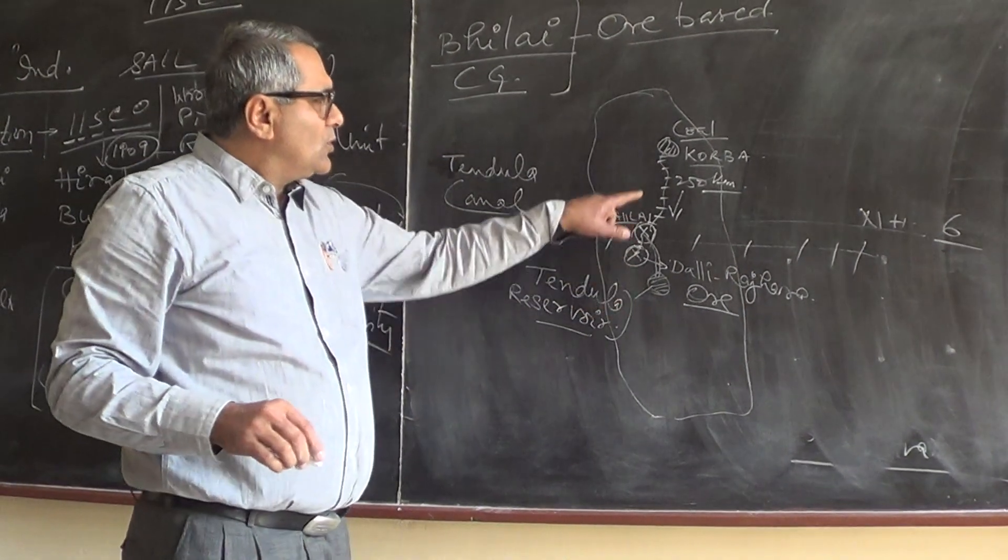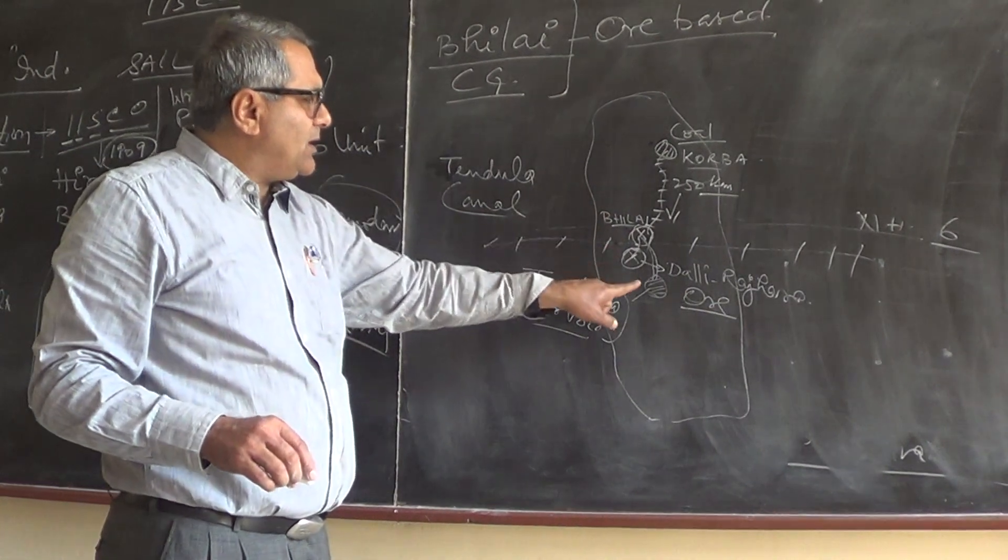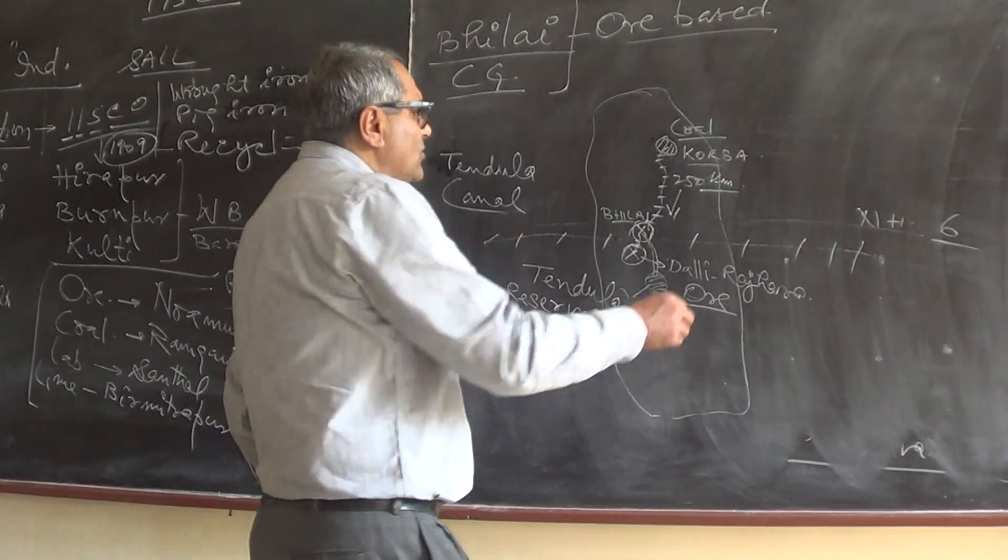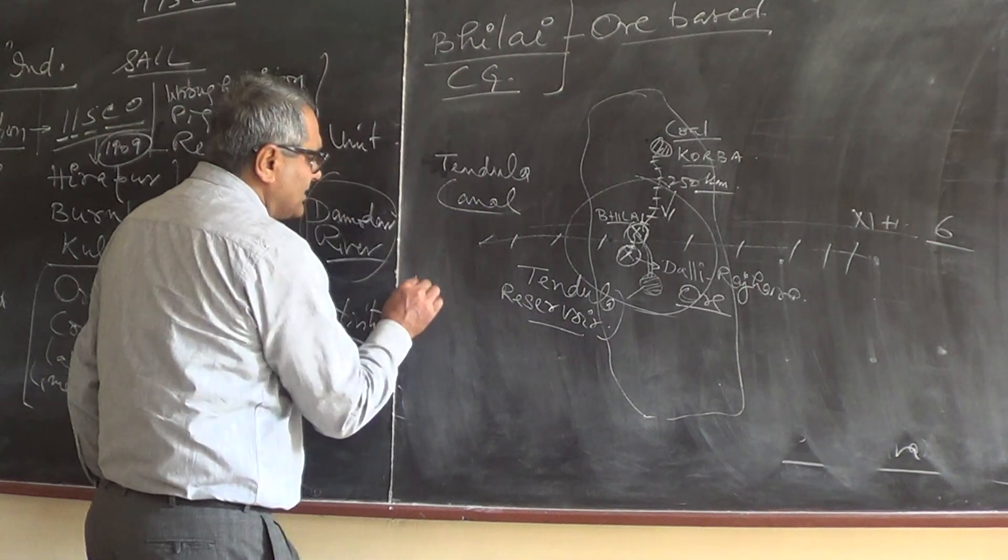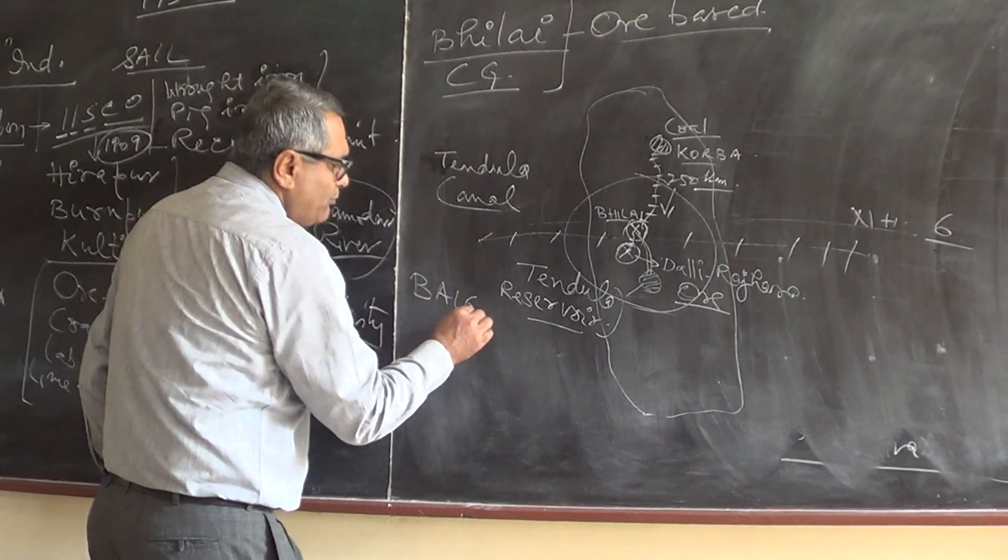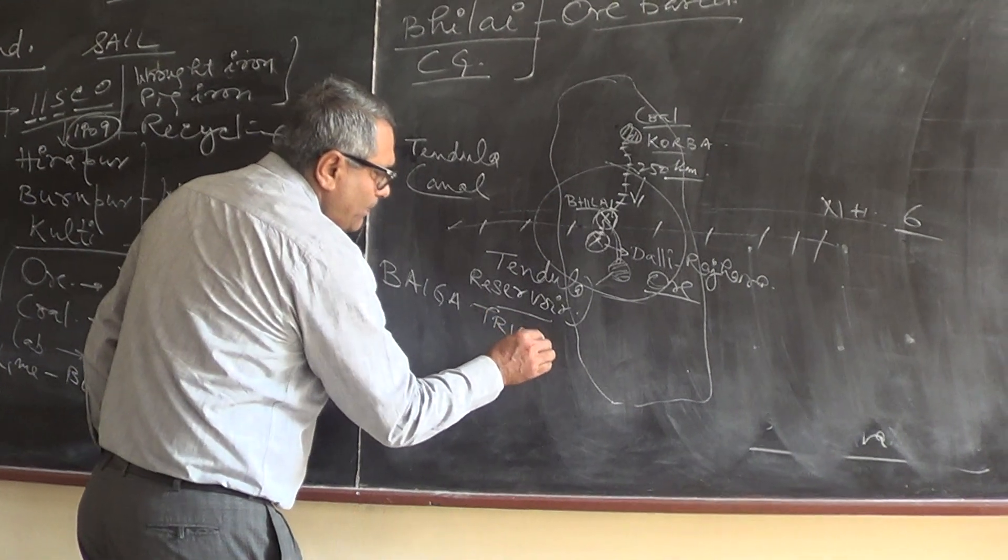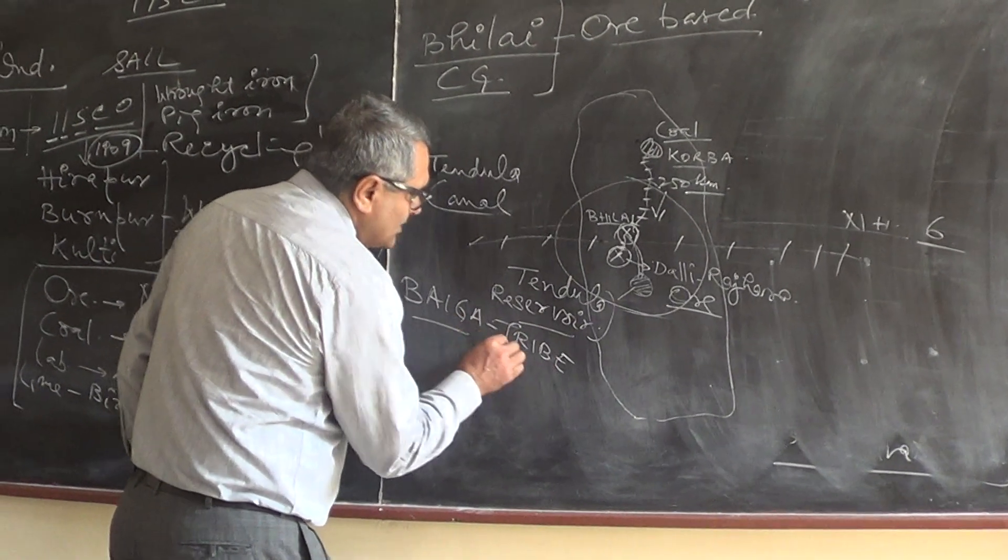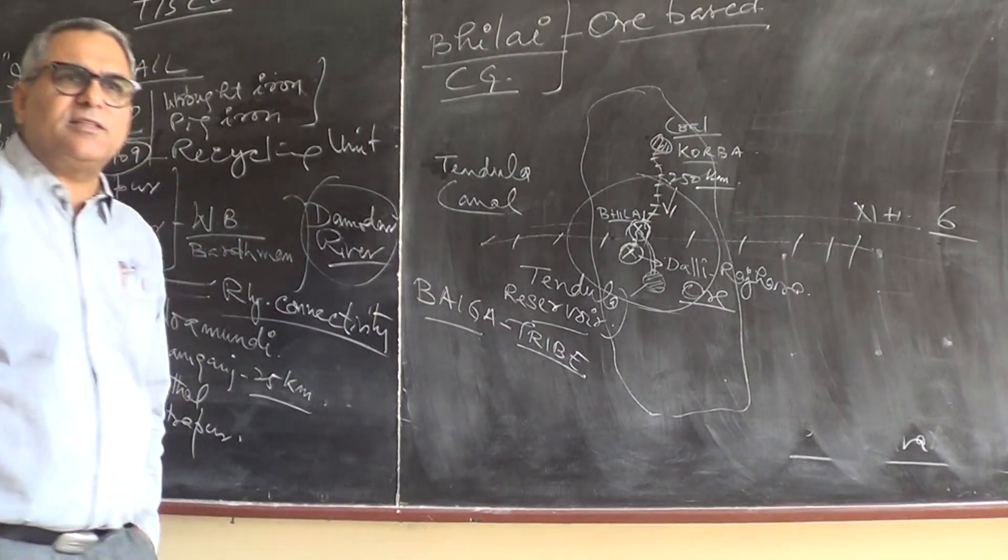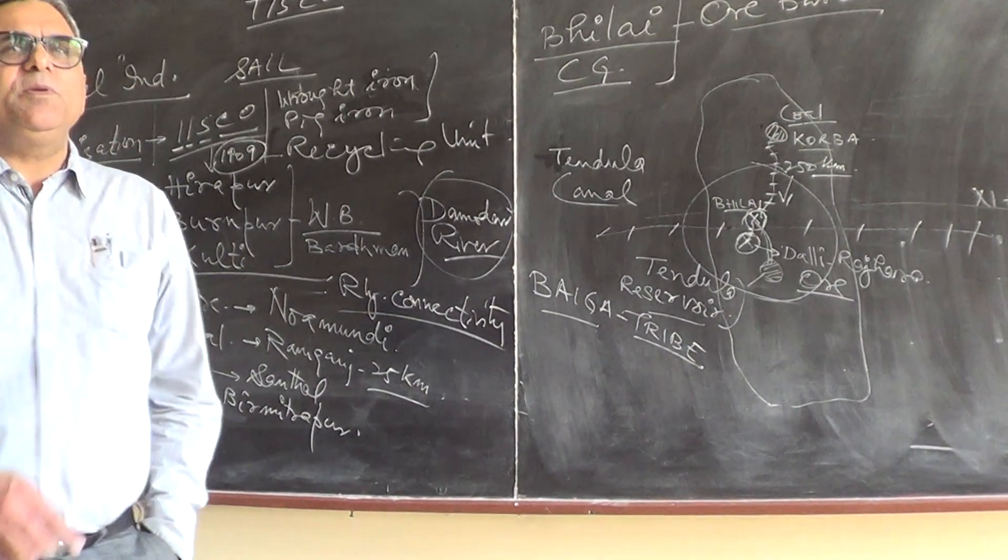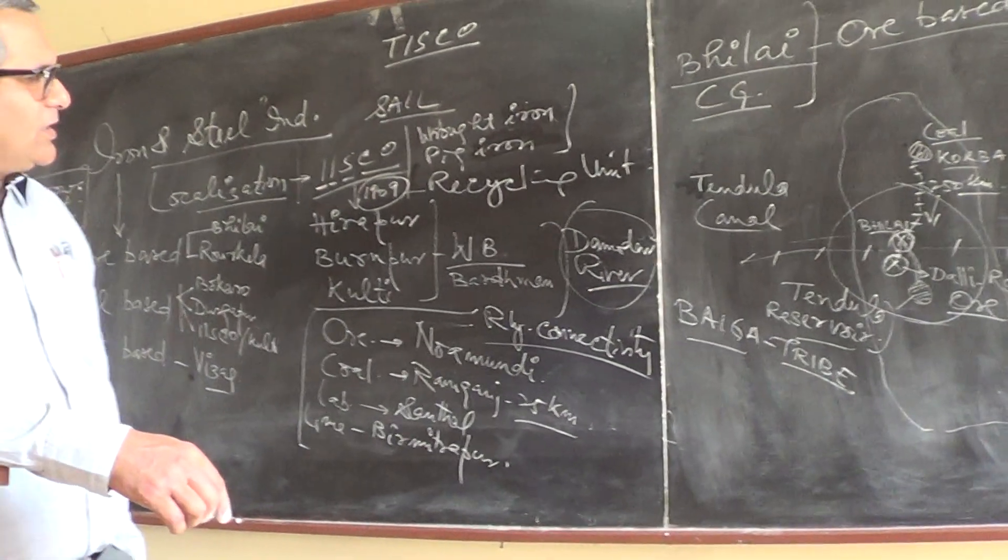So coal is coming from Korba. And this is called Baigar inhabited region, Baigar tribe. This is Baigar tribe inhabited region where labor is cheaply available in the remote region.